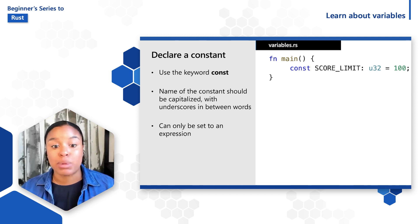Constants can only be set to an expression, not the result of a function call or anything else with a value that is computed at program runtime. Constants are valid for the entire time a program runs within the scope they were declared in.